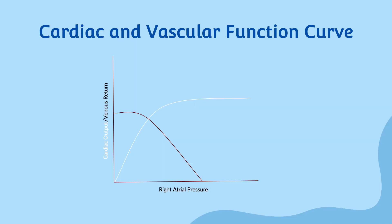To start, let's first define some terms. Inotropy refers to the contractility of the heart muscle. Venous return is the amount of blood returning to the heart from the body's peripheral circulation. Total peripheral resistance is the resistance that the blood vessels in the body offer to blood flow.